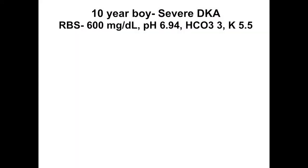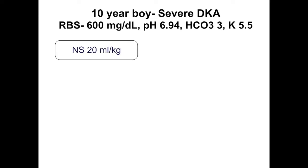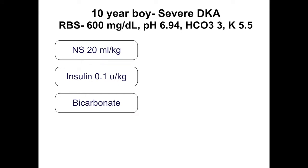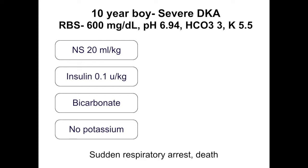Starting with a case to see how management has changed over the last decade: a 10-year-old child with severe DKA, blood sugar of 600, pH of 6.94, very low bicarbonate, and potassium of 5.5. Standard management from textbooks of 10 years ago would include a bolus of 20 ml/kg, insulin bolus of 0.1 unit/kg, bicarbonate because pH is less than 7.1, and not adding potassium. Unfortunately, this child had a tragic sudden respiratory arrest and death.